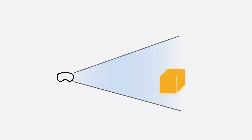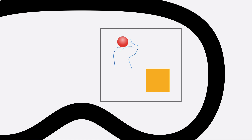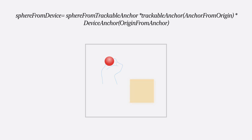Imagine a scene within the device field of view where there is a red sphere being held in the person's hand, and a yellow cube sitting in the environment. For any rendered content that is not attached to a trackable anchor — like the yellow cube — by querying the device pose at presentation time, you can calculate its transform relative to the device transform. However, for any rendered content attached to a trackable anchor — like the red sphere — you will use both the trackable anchor position and the device position. For trackable anchor prediction, use the trackable anchor time.